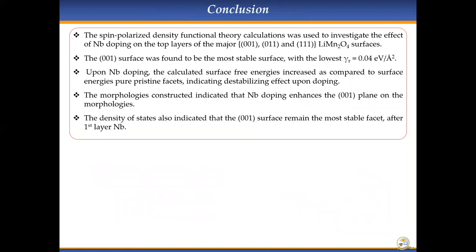In conclusion, we successfully used density functional theory to investigate the effect of niobium doping on the top layers of the major lithium manganese oxide surfaces: the 001, 011, and 111 surfaces. The 001 surface was found to be the most stable surface with the lowest surface energy of 0.04 electron volts per angstrom squared for pristine surfaces. Upon doping, we observed an increase in surface free energies compared to the pristine surfaces, indicating a destabilizing effect upon doping. The morphologies also indicated that the most dominant surface before and after doping was the 001 plane.